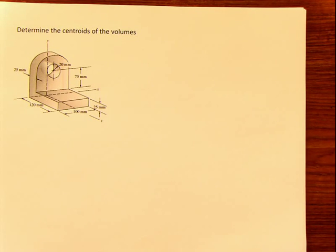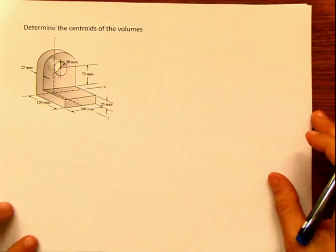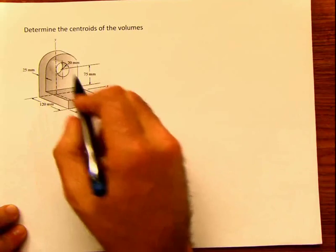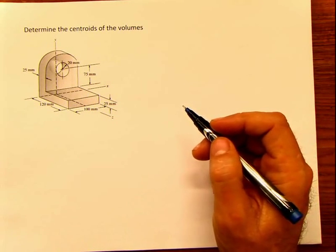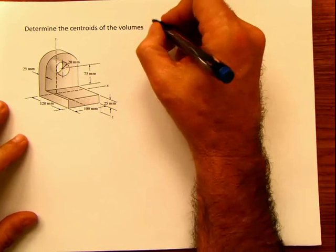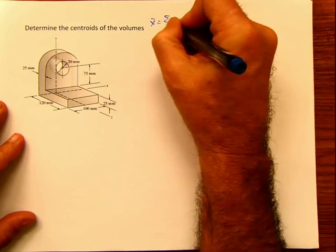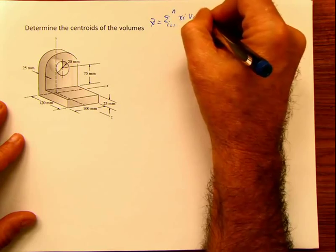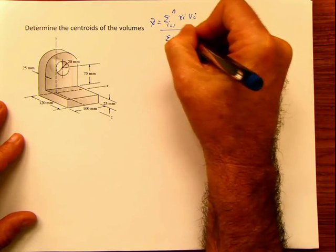Here we are again with another problem. This is a centroid of volumes — we have to determine the centroid of this shape. Everything is in millimeters. Because we are working with volumes now, x-bar is going to be the summation from i=1 to n of x_i·v_i divided by the summation from i=1 to n of v_i.